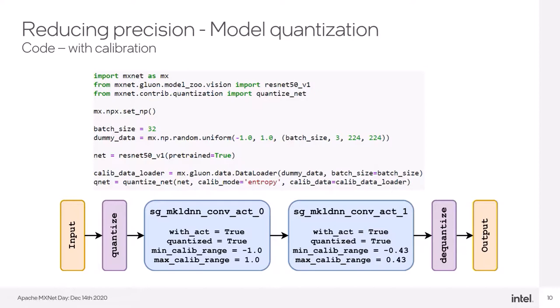In this example, this calib data is artificially created just for the presentation purposes, but in a real scenario, we will need to use the part of a real data, for example, 10 batches of your validation dataset to get the satisfying accuracy.